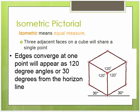In isometric pictorial, isometric means equal measure. The edges converge at one point will appear as 120 degree angles or 30 degrees from the horizon. So what they're saying here is that either 30 degrees from the horizon, or 90 degree angles appear to be 120. That's one way to know it's a pictorial.